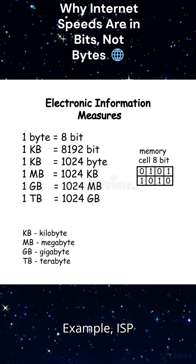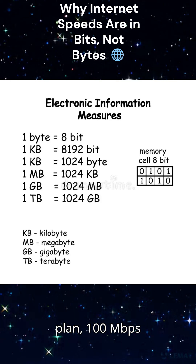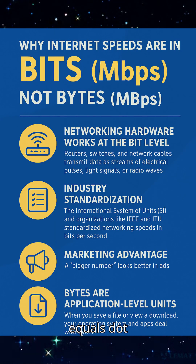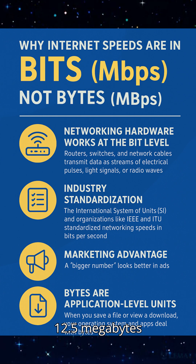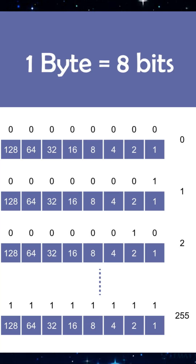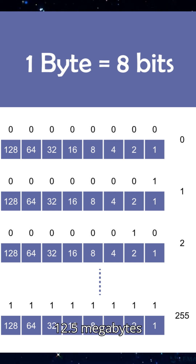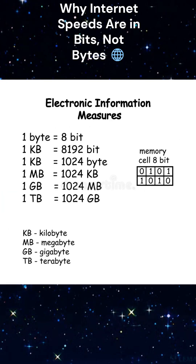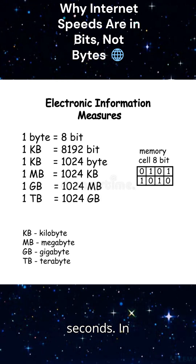Example: An ISP plan of 100 Mbps equals 12.5 megabytes per second maximum download speed. So if you download a 1 gigabyte file, it takes about 1,000 megabytes divided by 12.5 megabytes per second, which equals 80 seconds.